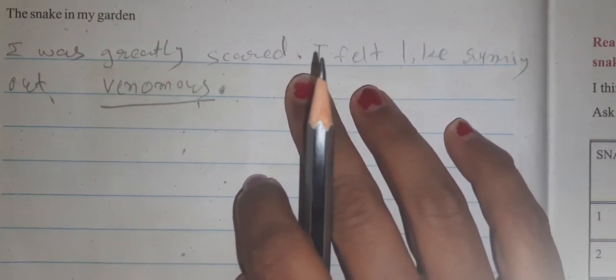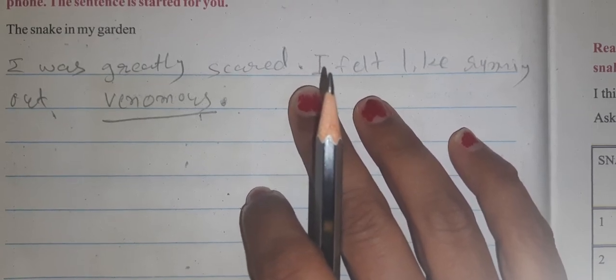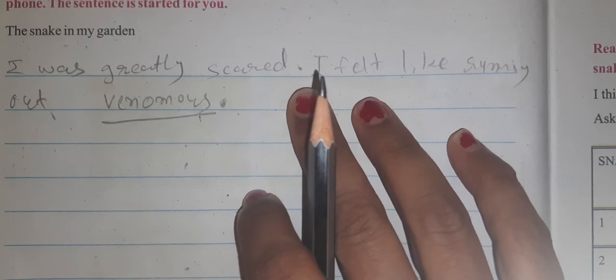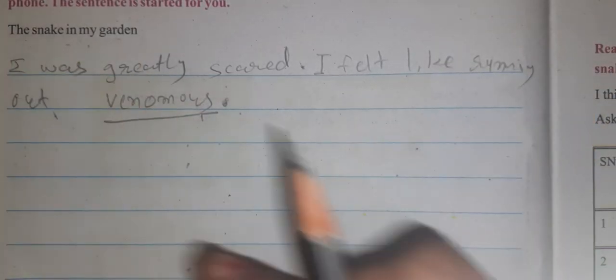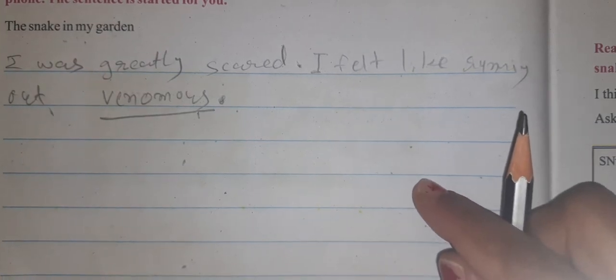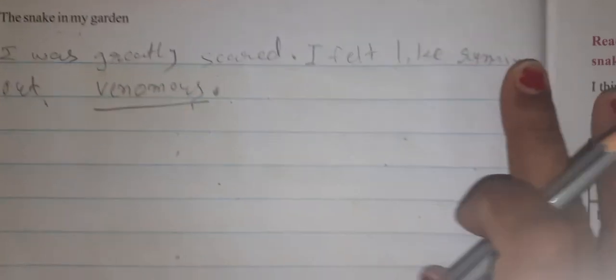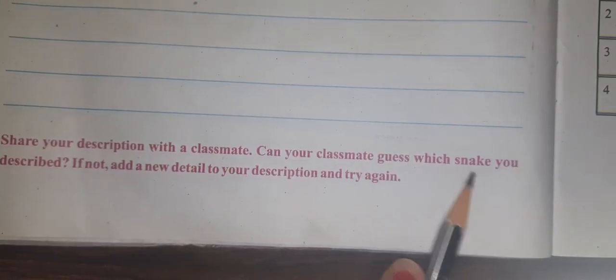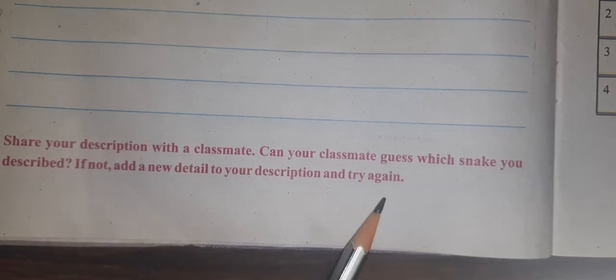Then what did you do? You rang someone, called someone, or sent someone to tell the neighbors about the snake. You need to write a description and tell the size and color of the snake. Now share your description with your classmate and see if your classmate can guess which snack you described. If not, add a new detail to your description and try again.